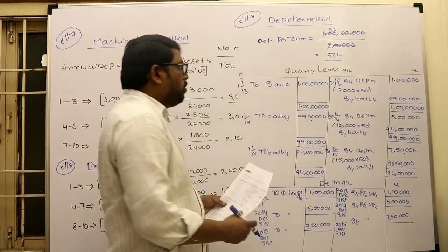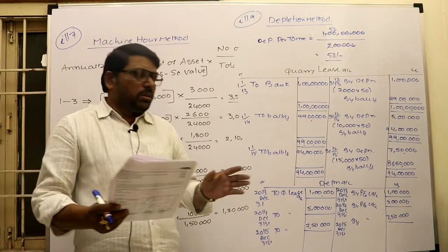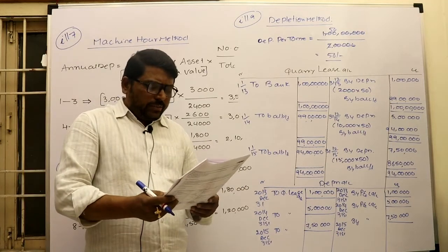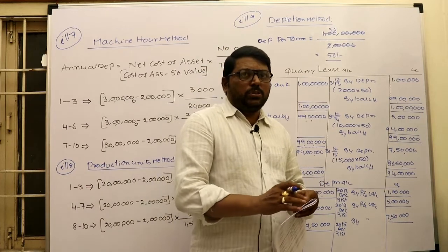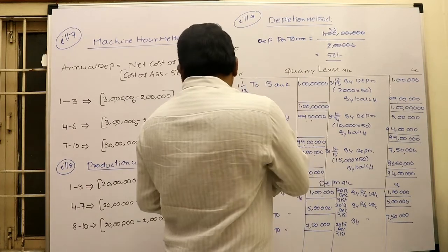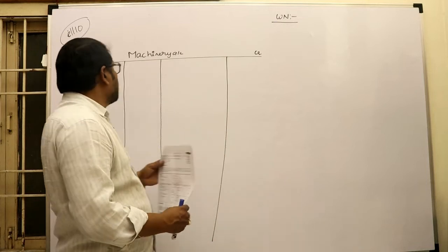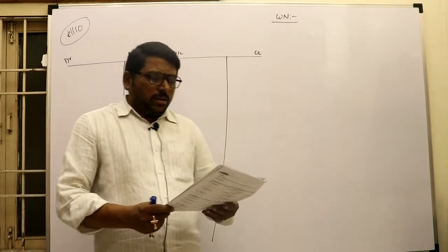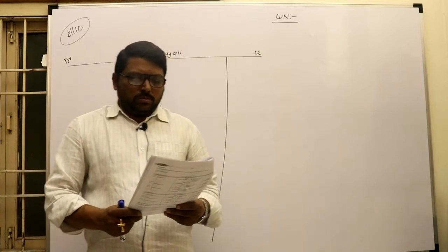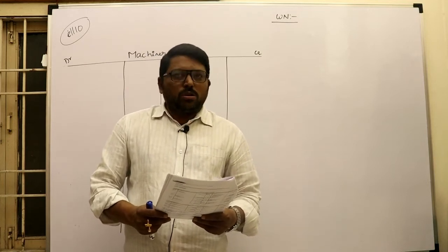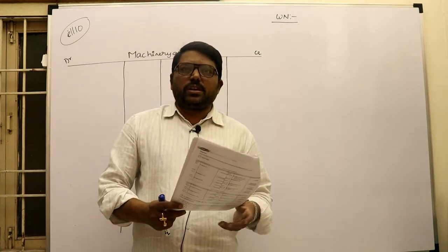The depletion method is applicable to natural resources like coal mines, minerals, etc. The production unit method and depletion method are very similar — there is no significant difference in the annual depreciation formula. Now we discuss the last problem for today: illustration 10, where we see how to work out the machinery account when an asset is sold.